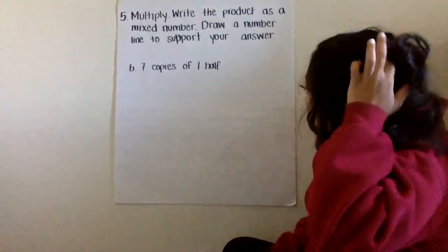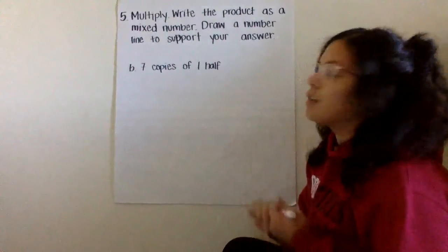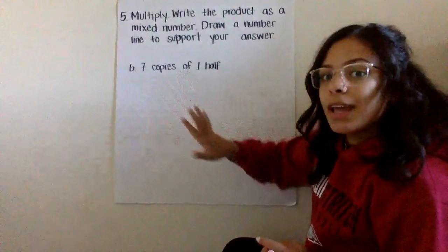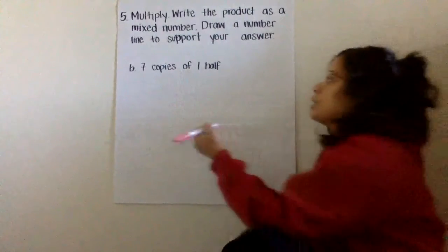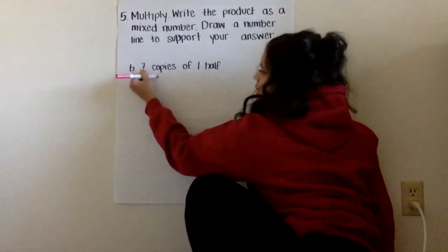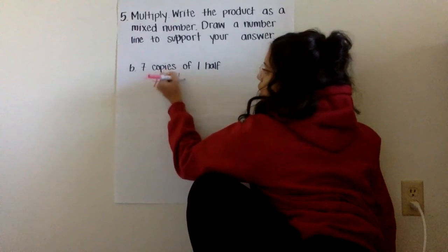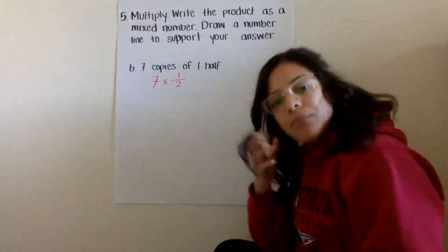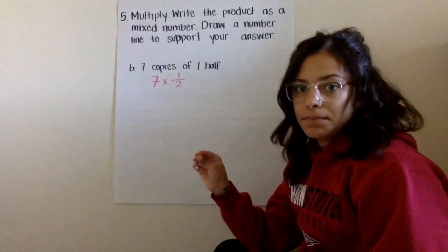So it wants you to multiply, right? The product is a mixed number and a drawn number line. So the first thing I'm going to do is I'm going to put this in a format that makes a little bit more sense to me. I have seven copies of one half. I'm doing seven times one half.